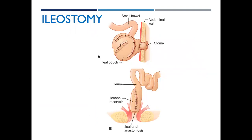An ileostomy brings a portion of the ileum to the surface, bypassing the large intestine. Drainage at this level is going to be liquid and continuous. The patient must wear an ostomy appliance at all times to collect the drainage. This stool typically is a little foul-smelling, so they can sometimes eat yogurt to help with the smell. Remember when constructing an ileostomy, they actually cut that portion of ileum and bring it to the surface, then reattach the ileum back together.